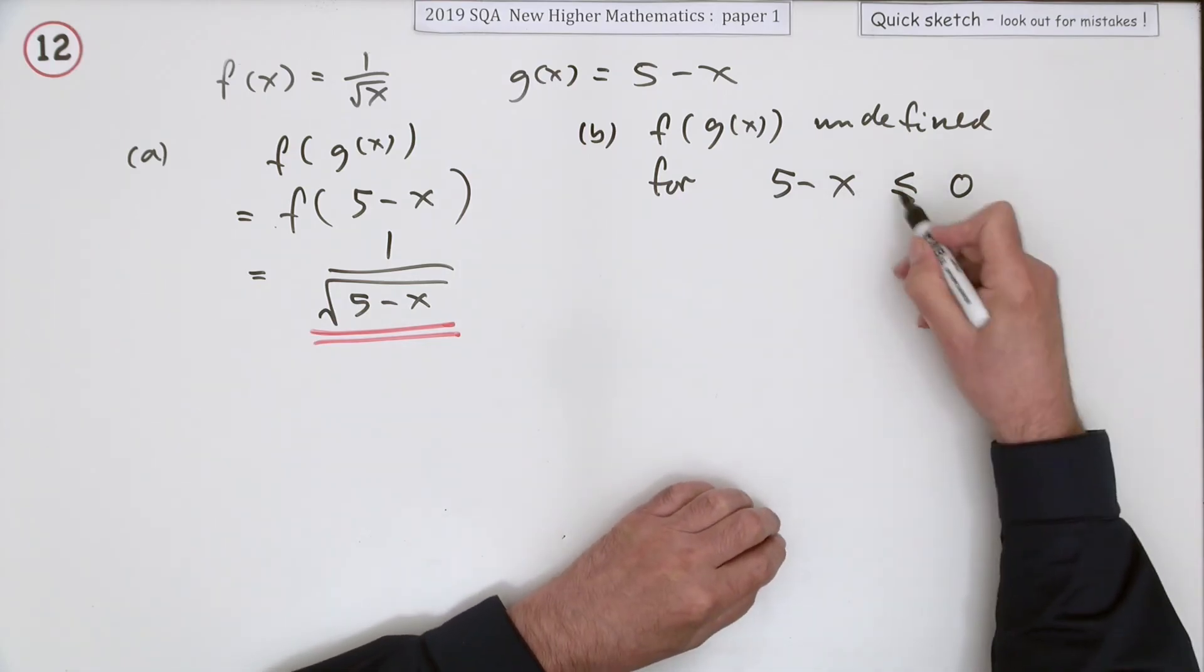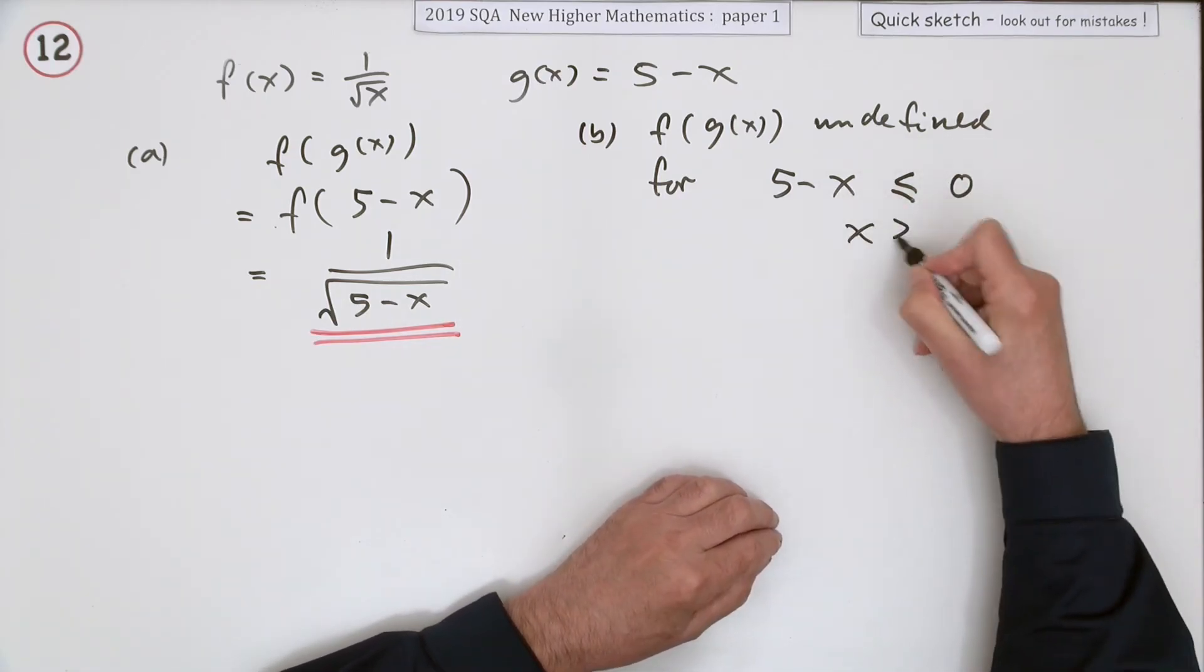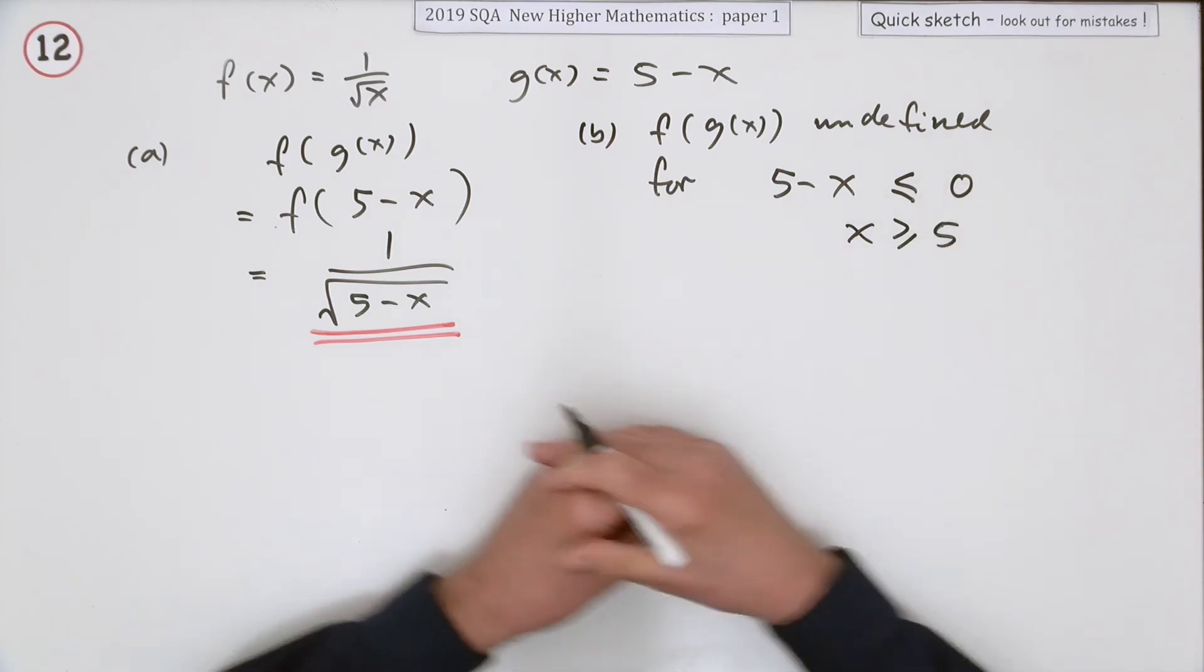Just solve that. So negative x is less than or equal to negative 5. Bringing that over, reading it backwards, x has to be greater than or equal to 5.